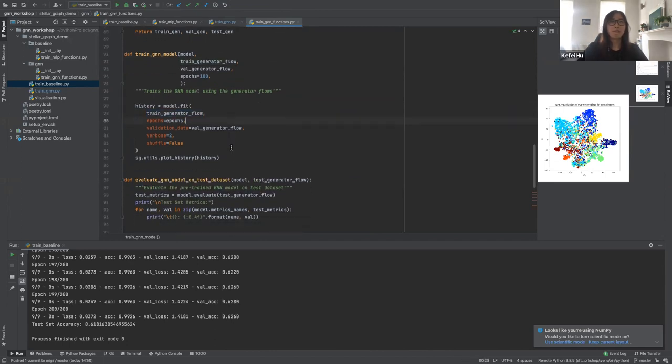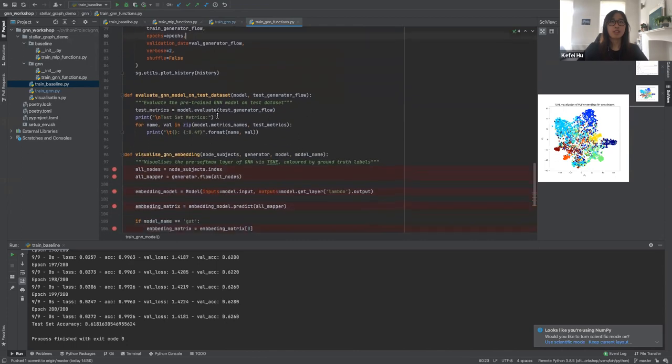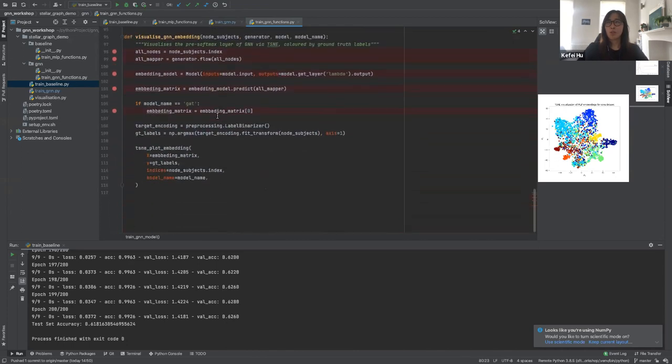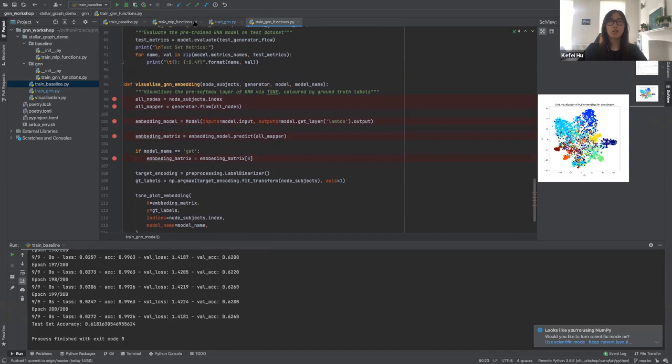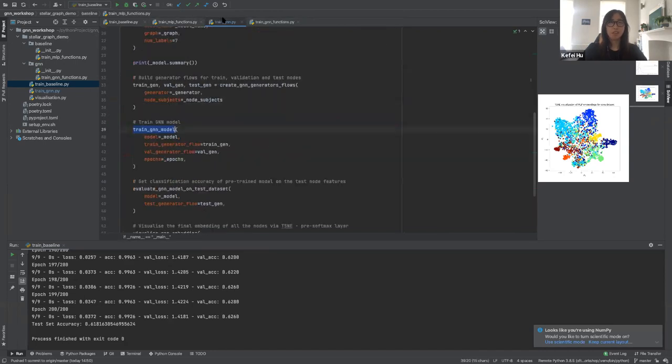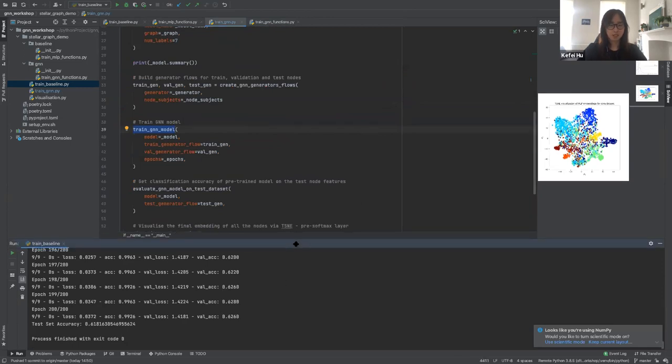One thing to mention is that when we visualize the embedding of our model, I am taking the final layer from the graph models, so that is the layer right before softmax as the embedding layer. I didn't realize the results for the baseline are finished. Let's see.